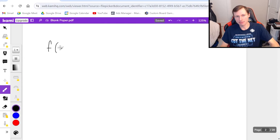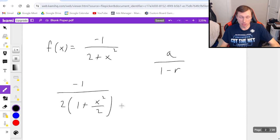Let's say this time I have f of x equals negative 1 over 2 plus x squared. So this one's less friendly, because if I want the form a over 1 minus r, this is not the form I want. This 2 stops it from happening. So what am I going to do? I'm going to factor out a 2 out of my denominator. So it will be 2 times the quantity 1 plus x squared over 2. That's what you have to do.